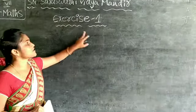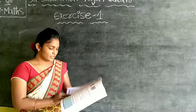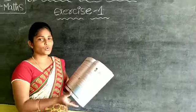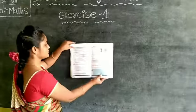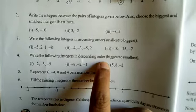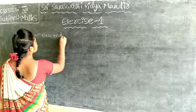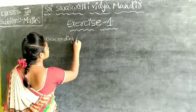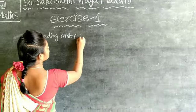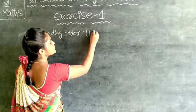See exercise 1. All of you open your textbooks and turn to page number 2. See exercise 1. Look at the textbook. Fourth one should be ready. Write the following integers in descending order. Descending order means biggest to smallest.